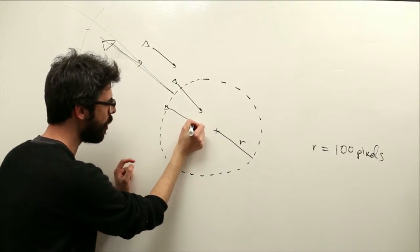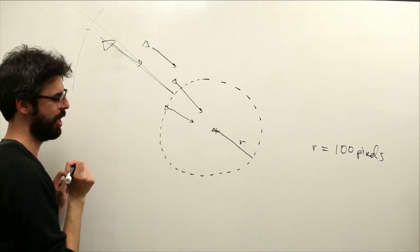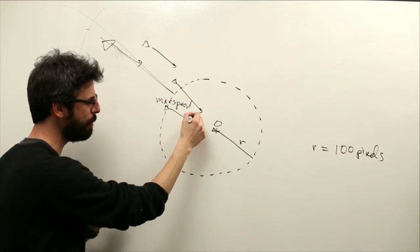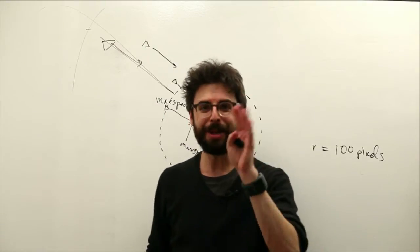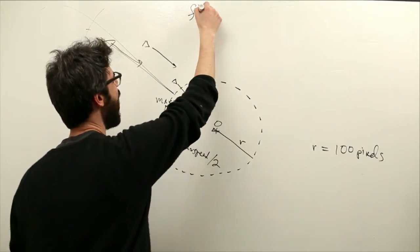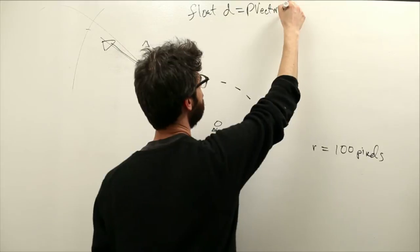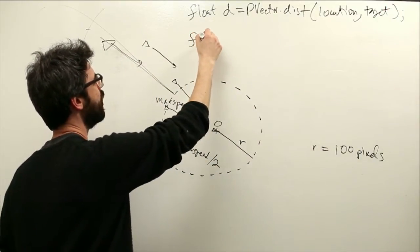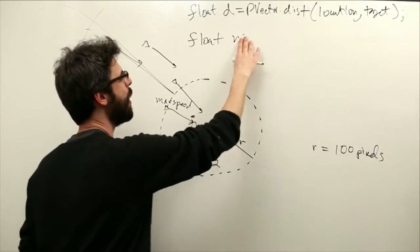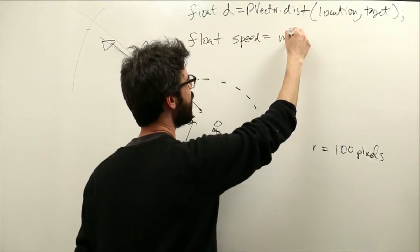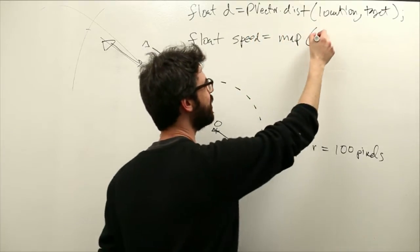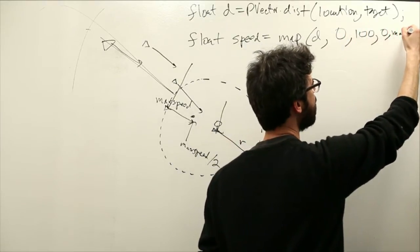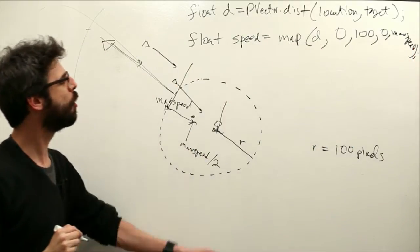Now, when it's right on the edge, it still desires to go at maximum speed. When it is right at the target, it desires, its magnitude is zero. Here's zero here, maximum speed here. So what is it when it's halfway in between? Maximum speed divided by two. So maybe you're thinking of something here. Maybe you're thinking that, hey, if I could get the distance, p-vector distance, between my location and the target, then I could say, hey, the magnitude, my speed, my desired speed, I could use the map function, right?